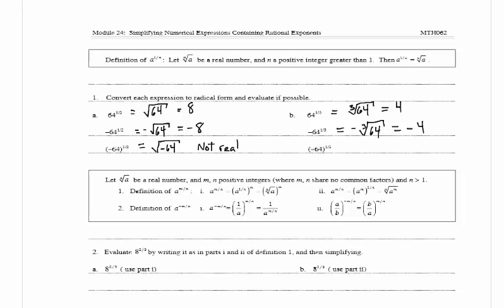Now we have negative 64 in parentheses all raised to the 1 third, so the negative goes inside the radical. We have the cube root of negative 64, and that is equal to negative 4.